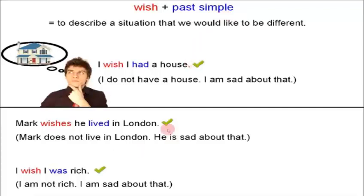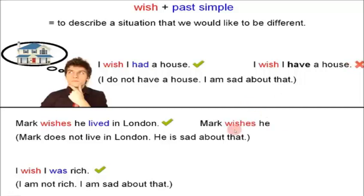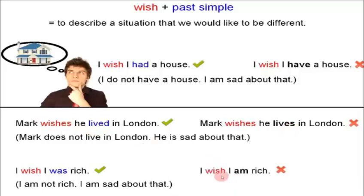So these forms are correct: 'I wish I had a house,' 'Mark wishes he lived in London,' 'I wish I was rich.' But these are wrong: 'I wish I have a house' — no, we must use past simple. 'Mark wishes he lives in London' — wrong, that uses present tense. 'I wish I am rich' — no, we must say 'I wish I was rich,' which is the past simple form of the verb 'to be.'